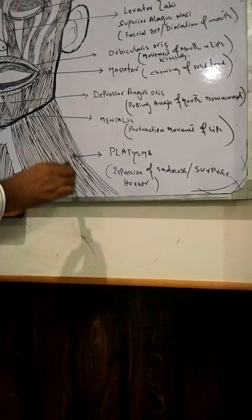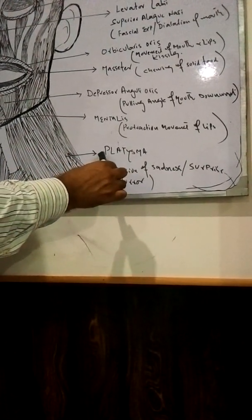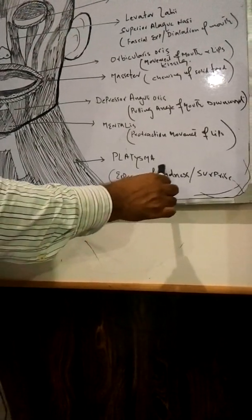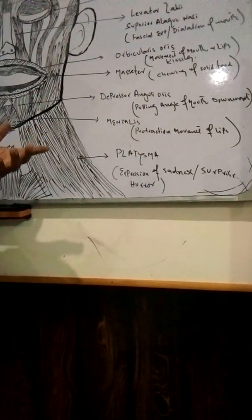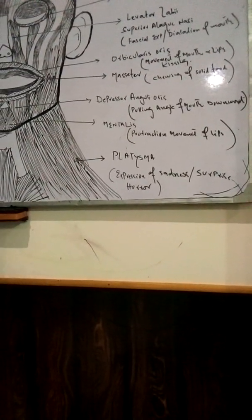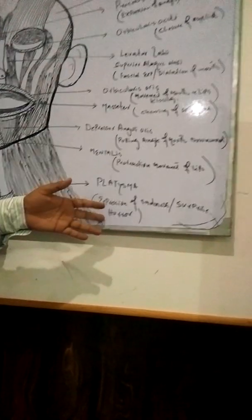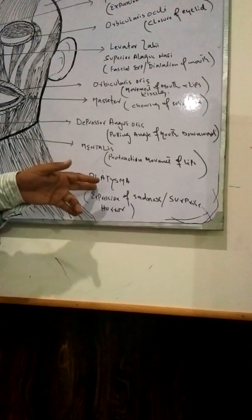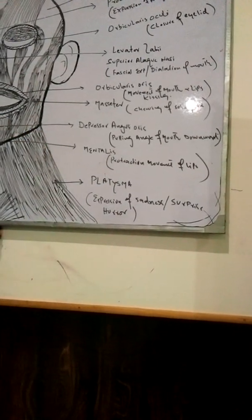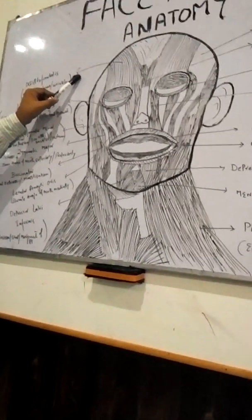At the neck area there is a large muscle called platysma. The platysma expresses emotions like sadness, surprise, and horror. If someone is expressing sadness, surprise, or horror, all these expressions are related to the platysma.